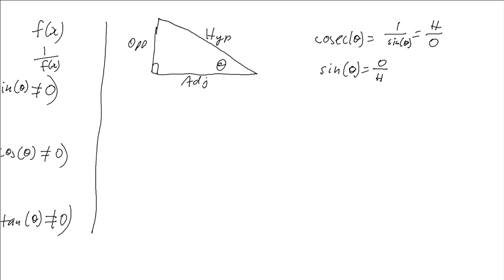If we have a look say at secant of theta, which we know is 1 over cos of the angle, well we know cos is the adjacent over hypotenuse. And so secant, which is the reciprocal, would be the hypotenuse over the adjacent.